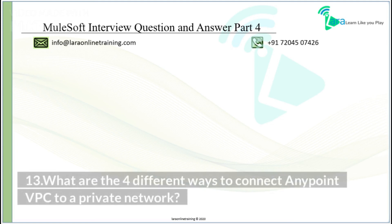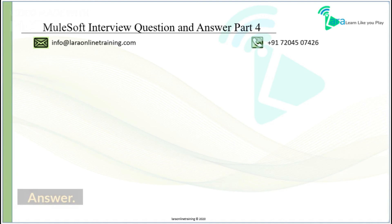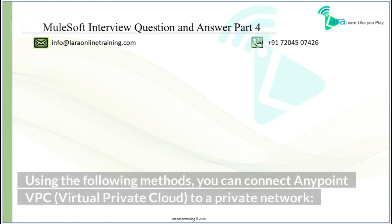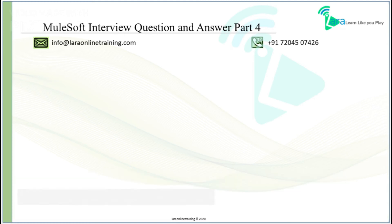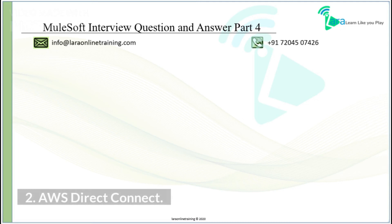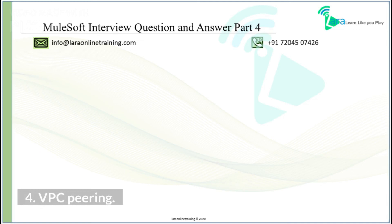What are the four different ways to connect Anypoint VPC to a private network? You can connect Anypoint VPC, Virtual Private Cloud, to a private network using the following methods: Transit Gateway Attachment, AWS Direct Connect, IPsec Tunnel, and VPC Peering.